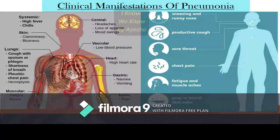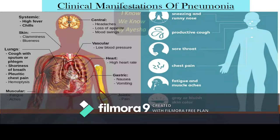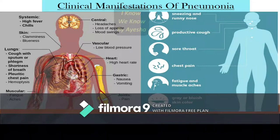Clinical manifestations and signs and symptoms of pneumonia can generally include sneezing with runny nose, productive cough, sore throat, chest pain, fatigue, muscle aches, and grey or bluish skin color due to hypoxia. All body systems can be affected: CNS — severe headache, loss of appetite, mood swings; cardiovascular — low blood pressure, tachycardia; gastric — nausea, vomiting; joints — severe joint ache; systemic — high grade fever with chills; skin — clammy, cool, bluish color; lungs — severe cough with sputum, shortness of breath, pleuritic chest pain; muscles — fatigue and aches throughout the body.